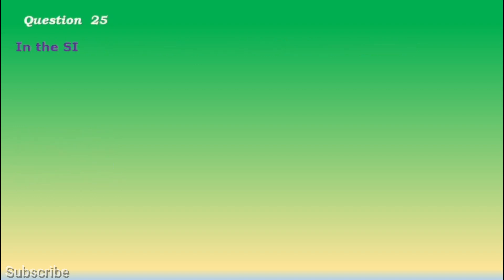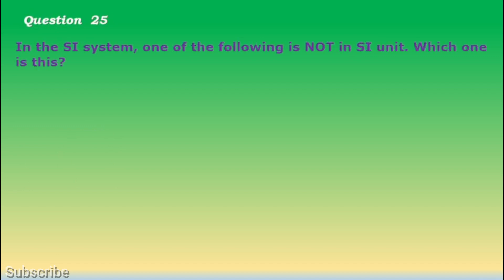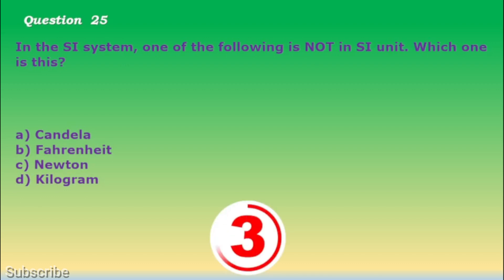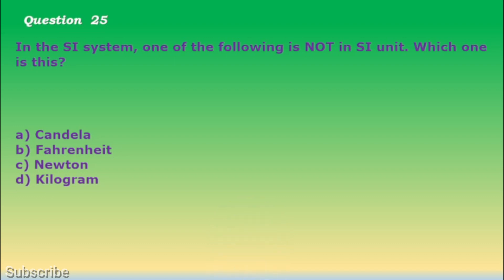Question number 25. In the SI system, one of the following is not an SI unit. Which one? a. Candela, b. Fahrenheit, c. Newton, d. Kilogram. The correct answer is letter b. Fahrenheit.